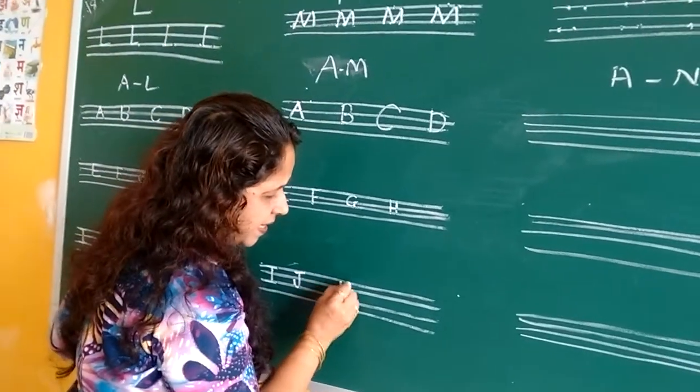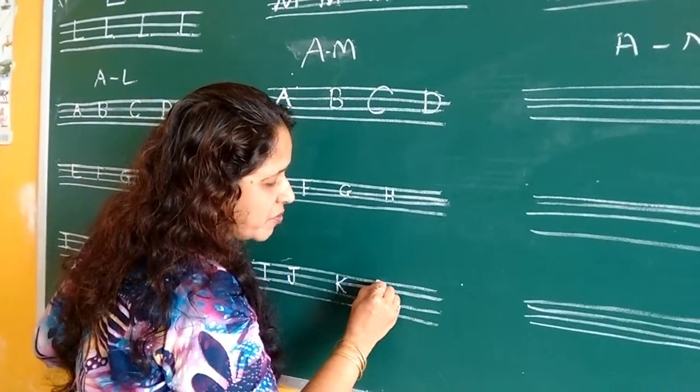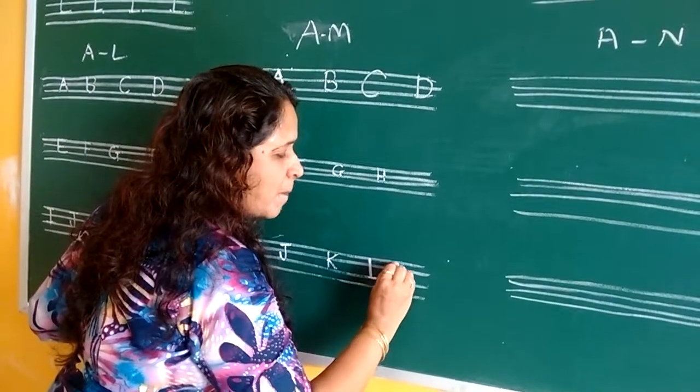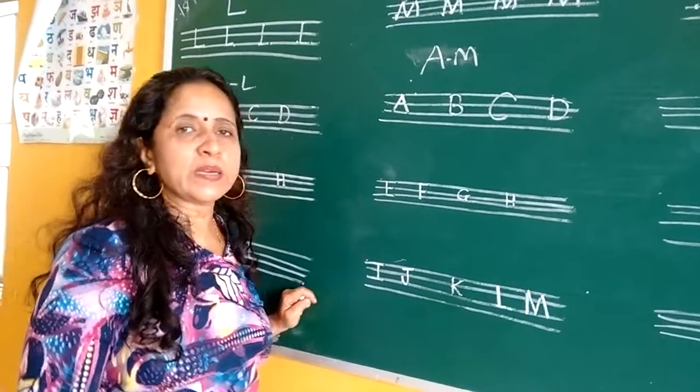Standing line, slanting line, slanting line. L, you have to write standing line, sleeping line. And M, up, down, up, down. This is M for monkey.